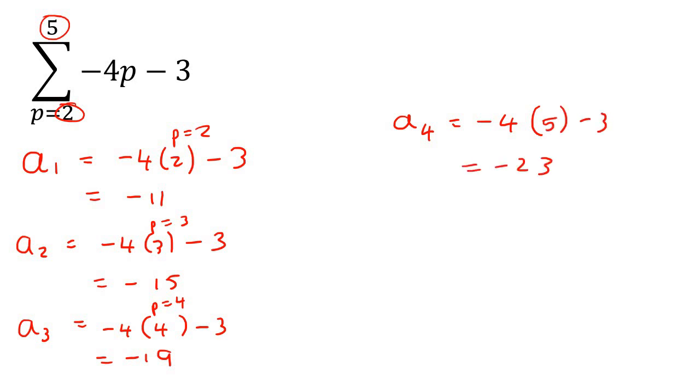And that's going to be negative 23. So then what we're going to do is we're going to go and remember that this symbol over here means plus. So we're going to add all of these numbers together. Let's go do that. And so that's going to be negative 68.